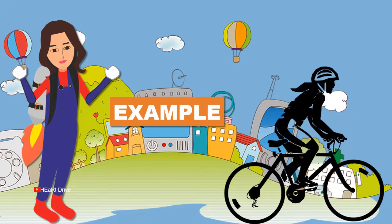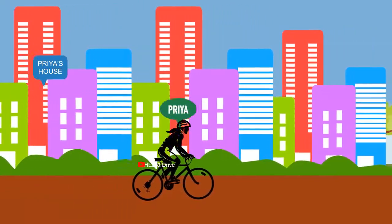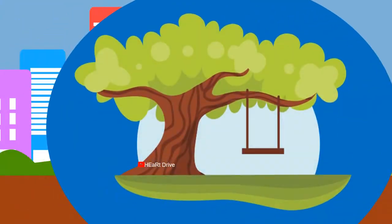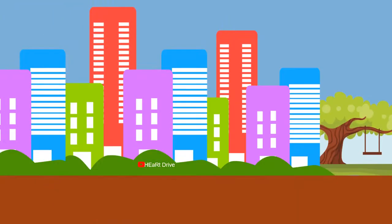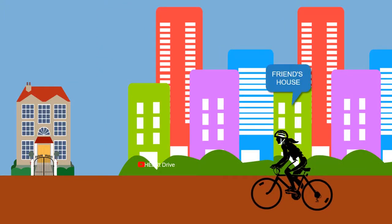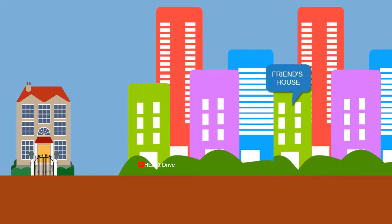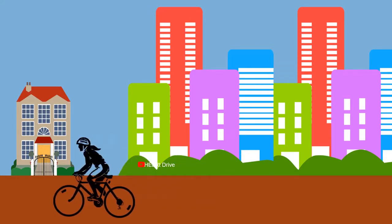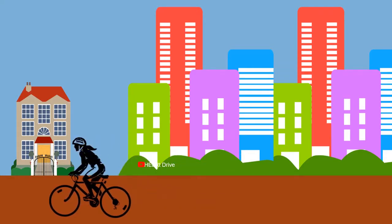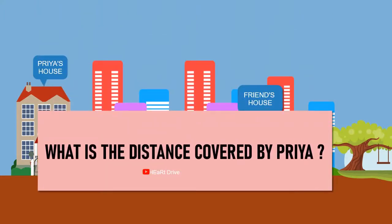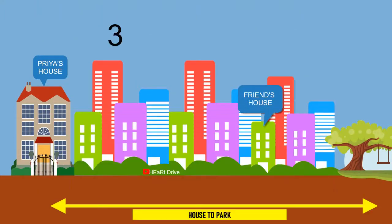Let's understand distance and displacement through examples. Priya cycles three kilometers east from her house and reaches a park. After enjoying a few hours in the park, she moves towards west to reach her friend's house, which is one kilometer away from the park.